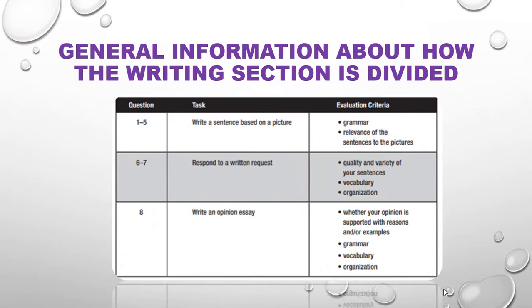General information about how the writing section is divided: This is the TOEIC writing test. This test includes 8 questions that measure different aspects of your writing ability. The test lasts approximately 1 hour. For each type of question, you will be given specific directions, including the time allowed for writing.